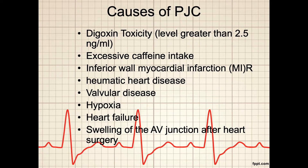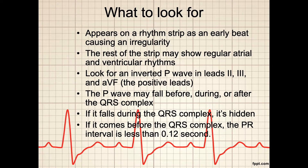Although PJCs themselves aren't typically dangerous, monitor the patient carefully and assess for other signs of intrinsic pacemaker failure. On the rhythm strip, a PJC appears as an early beat causing an irregularity, while the rest of the strip may show regular atrial and ventricular rhythms. Look for inverted P waves in leads 2, 3, and AVF — the positive leads. The P wave may fall before, during, or after the QRS complex; if it falls during the QRS, it will be hidden. If it comes before the QRS, the PR interval will be less than 0.12 seconds; if greater than 0.12 seconds, the impulse originated in the atria. The QRS complex has a normal configuration and duration of less than 0.12 seconds. The T wave and QT interval are usually normal.